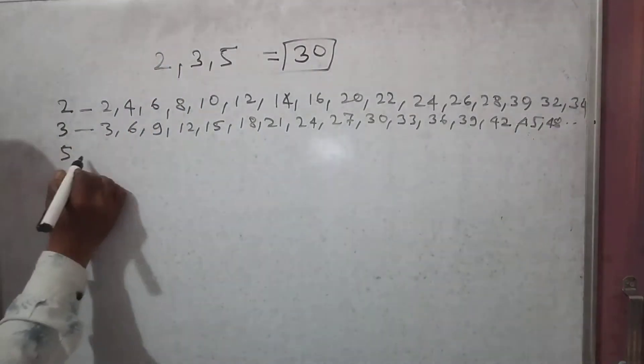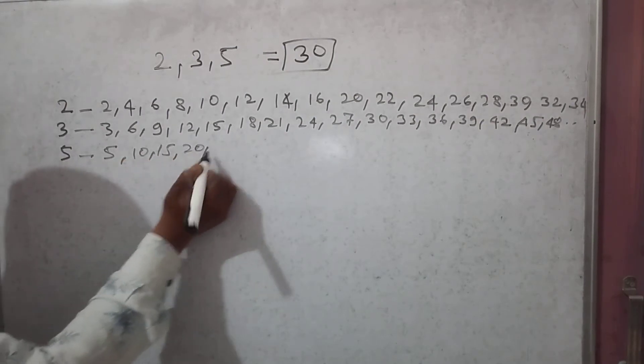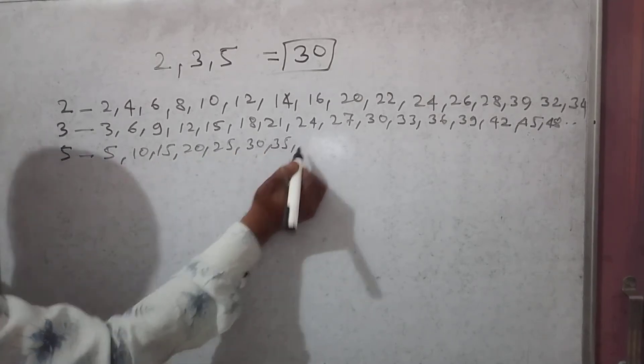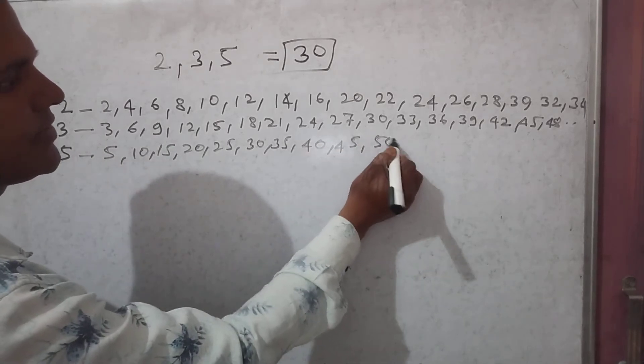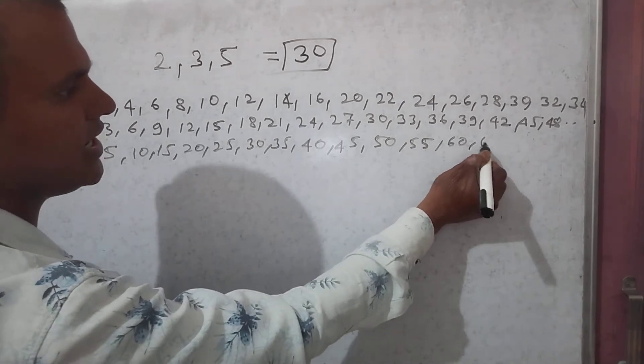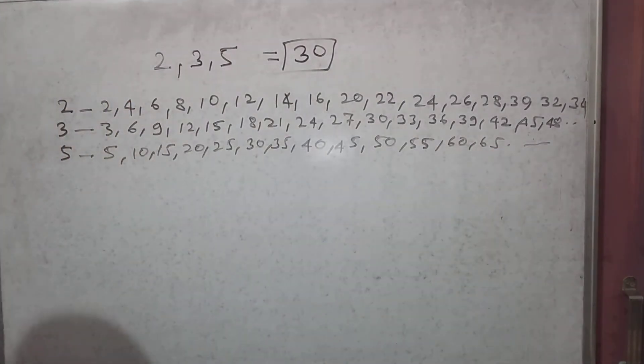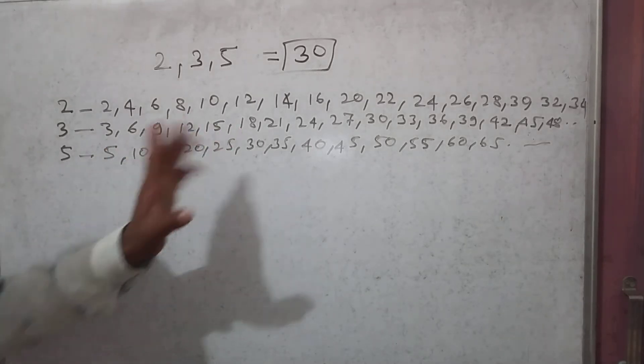Multiples of 5 are: 5, 10, 15, 20, 25, 30, 35, 40, 45, 50, 55, 60, 65, 70, 75, and so on. What is common? 5 is common? Not here. 10 is common? Not. 15 is common? Not. 20 is common? Not. 25 is common? Not.